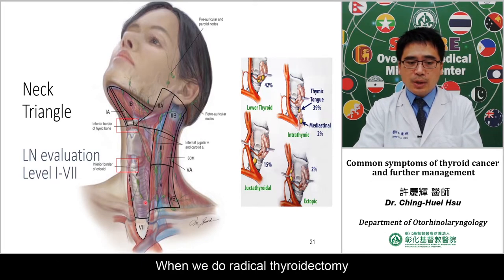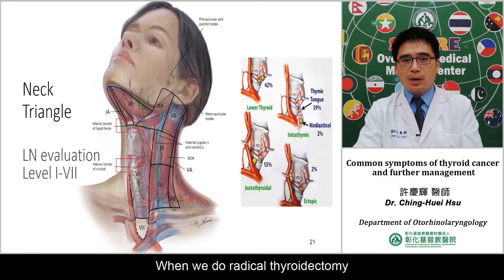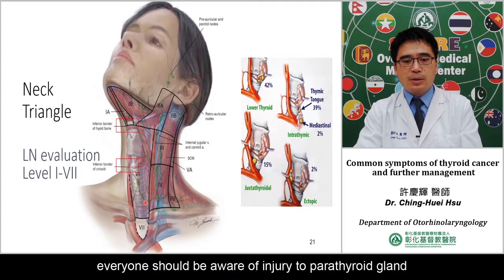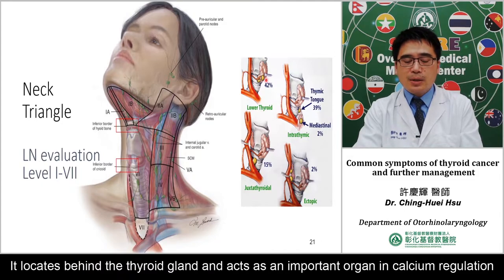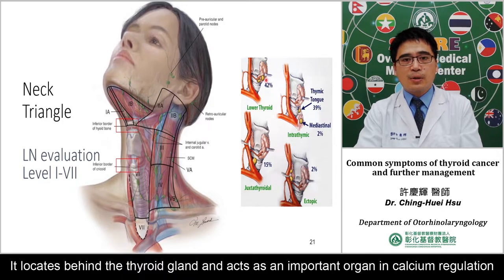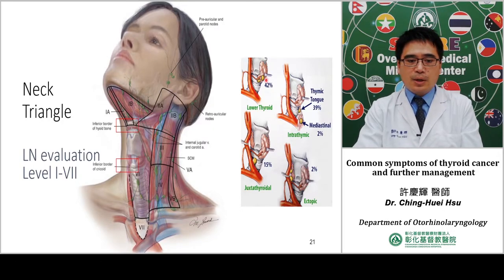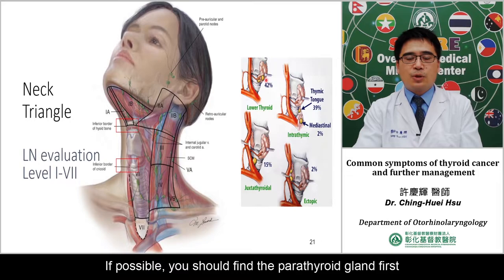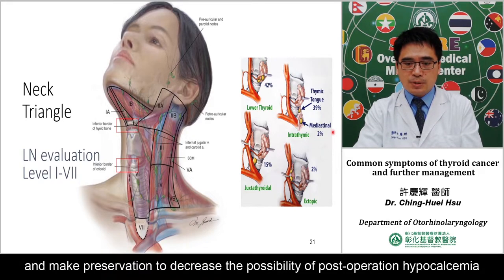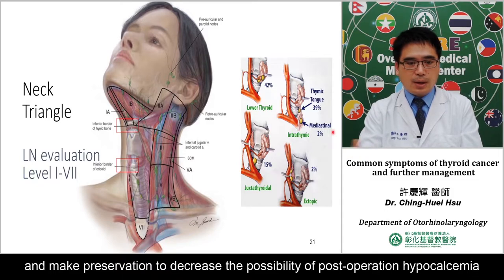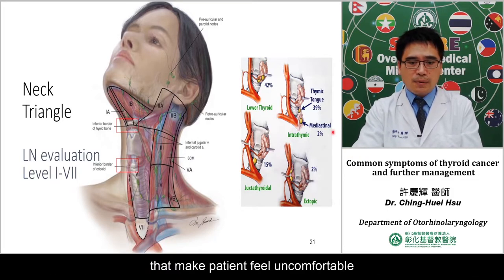When performing total thyroidectomy, everyone should be aware of the parathyroid gland. It is located behind the thyroid gland and is important for calcium regulation. If possible, you should find and preserve the parathyroid gland first to decrease the possibility of hypocalcemia and patient discomfort.